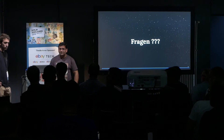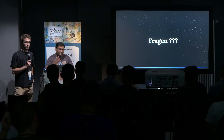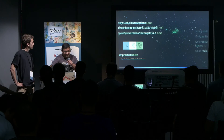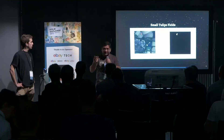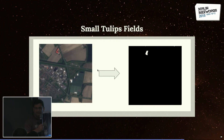Q&A: One question asked whether roofs cause problems for detecting tulip fields. Yes, they definitely do — because we're only using three bands (red, green, blue). A red roof looks similar to a tulip field in RGB. With additional infrared bands, you would get better discrimination. Another question: how long does it take to train U-Net and what hardware was used? We used an NVIDIA Titan V. It took about nine hours to train for 50 epochs; the best performing epoch was at epoch 23, so roughly eight hours of training suffices.